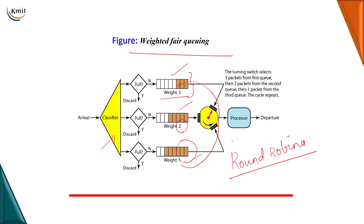Here every priority class packet gets a fair chance of getting processed — 3 from here, 2 from here, 1 from here. So there is no question of starvation as such. This is the best, efficient, optimized technique for scheduling.